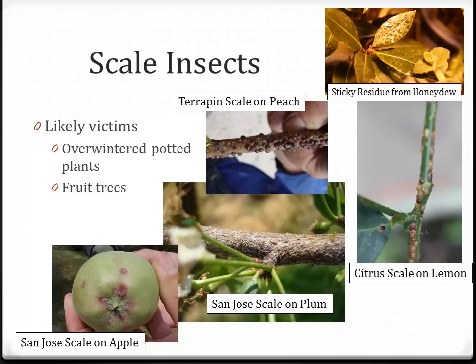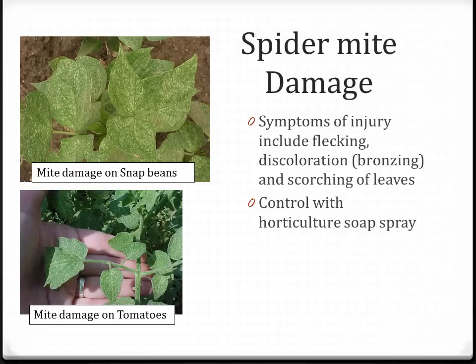Potted plants such as a Meyer lemon are also susceptible to citrus scale. Spider mites are sap-feeding insect relatives. Symptoms of injury include flecking, discoloration, and scorching of leaves. Spider mites are small and difficult to identify with the human eye. Using a hand lens, look on the underside of leaves first and also for signs of webbing.